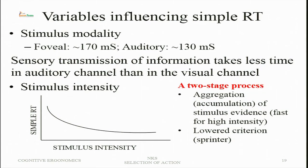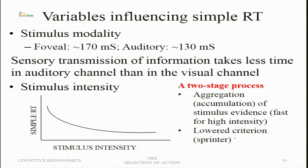Stimulus intensity is another variable — simple reaction time decreases with stimulus intensity. There is a two-stage process: first, aggregation where the sensory receptor accumulates information in the visual or auditory field, and then a lower criterion is set. Recall from signal detection theory that by lowering the criterion, more responses can be made faster. These two stages are independent.